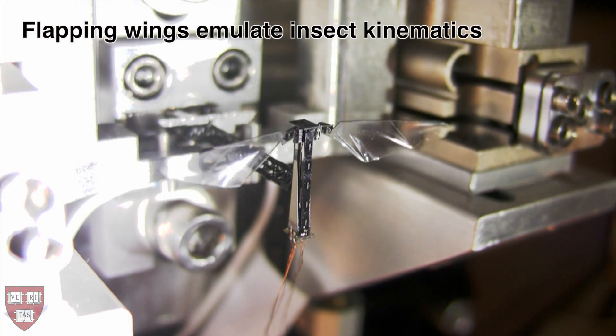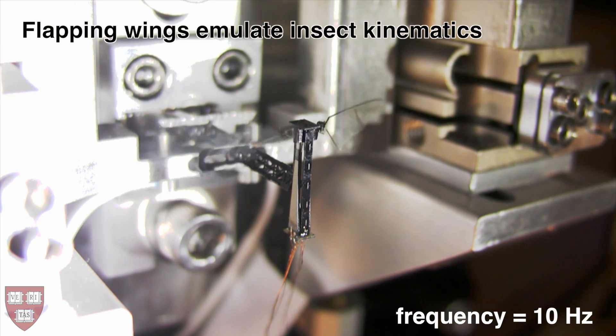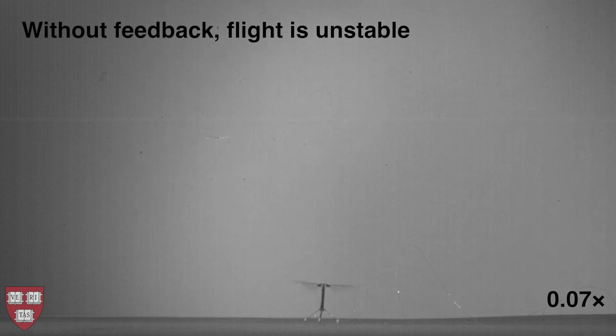This vehicle produces aerodynamic lift by flapping its wings with kinematics that closely resemble those of flies. By modulating wing stroke motions, torques can be applied to control the flight of the vehicle. Though the wings produce sufficient force to lift off, the vehicle quickly tumbles because of dynamic instability.